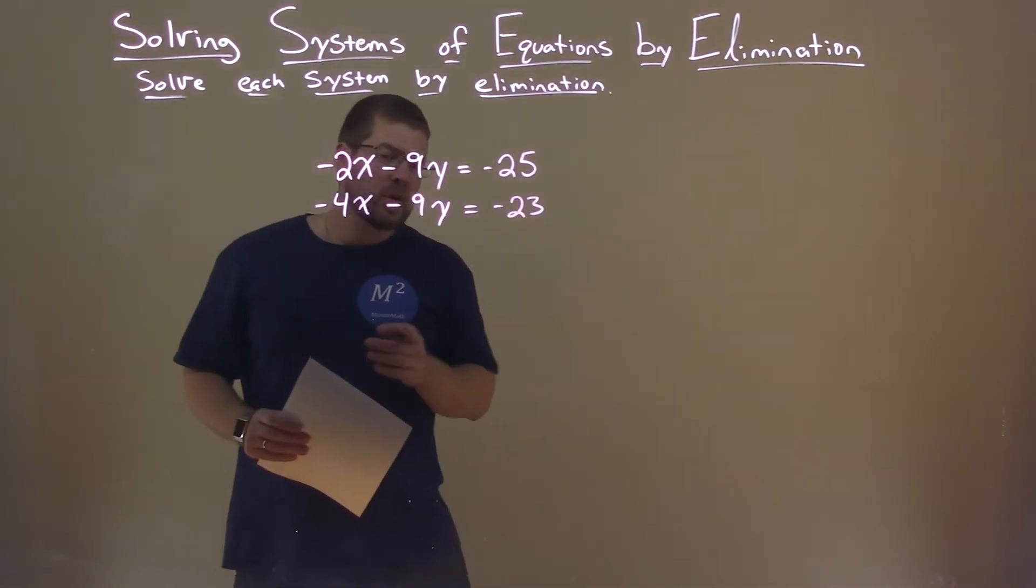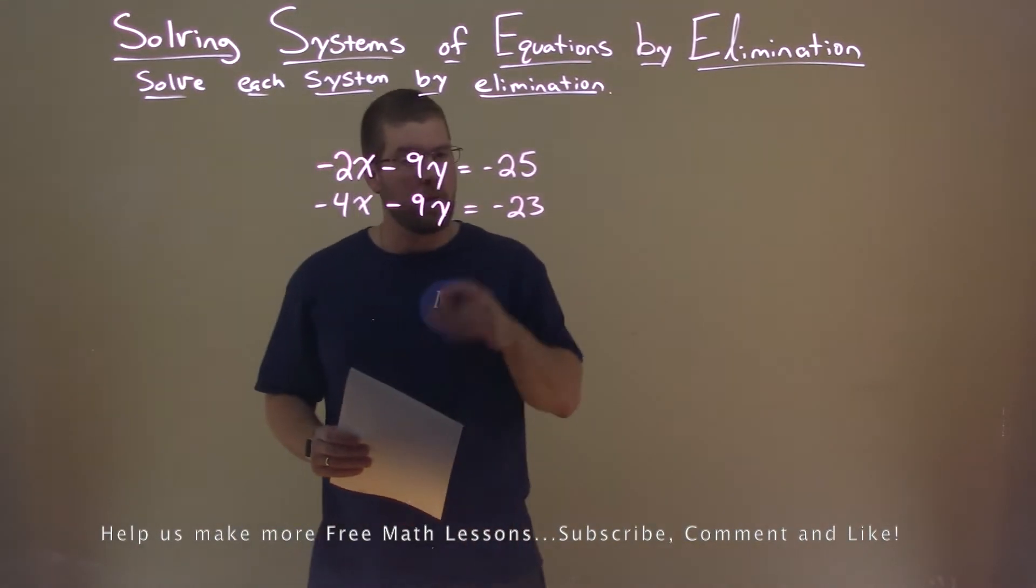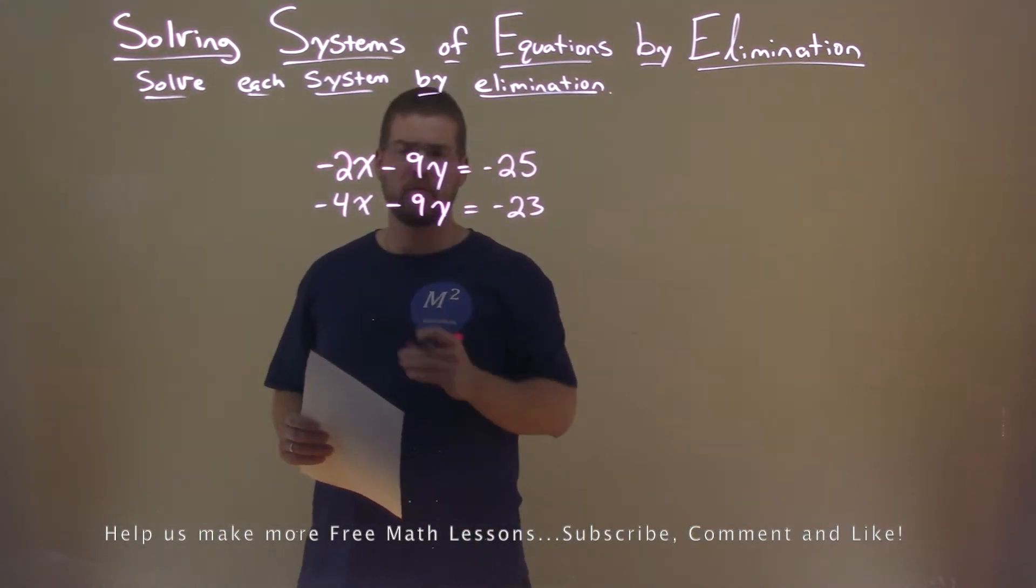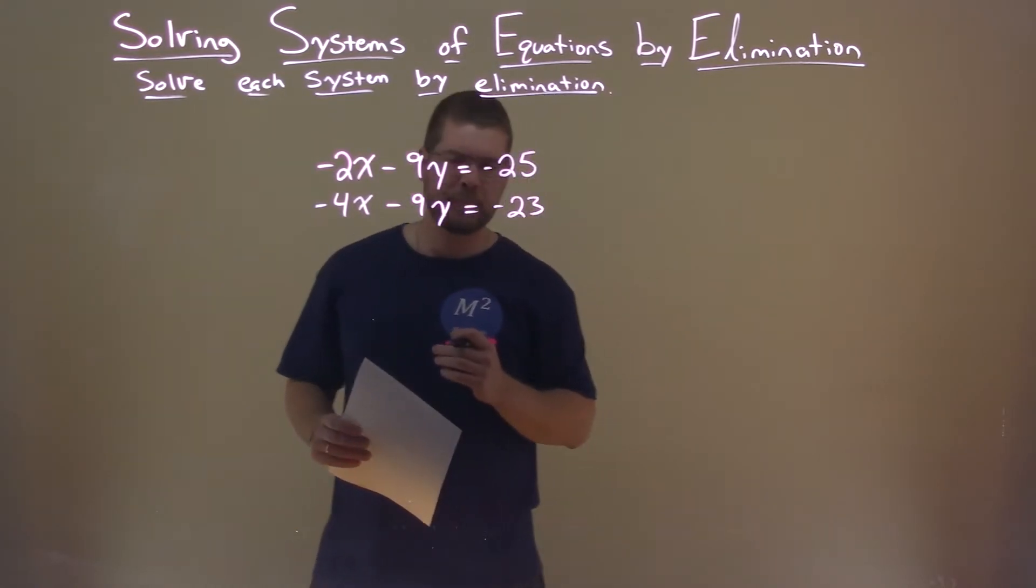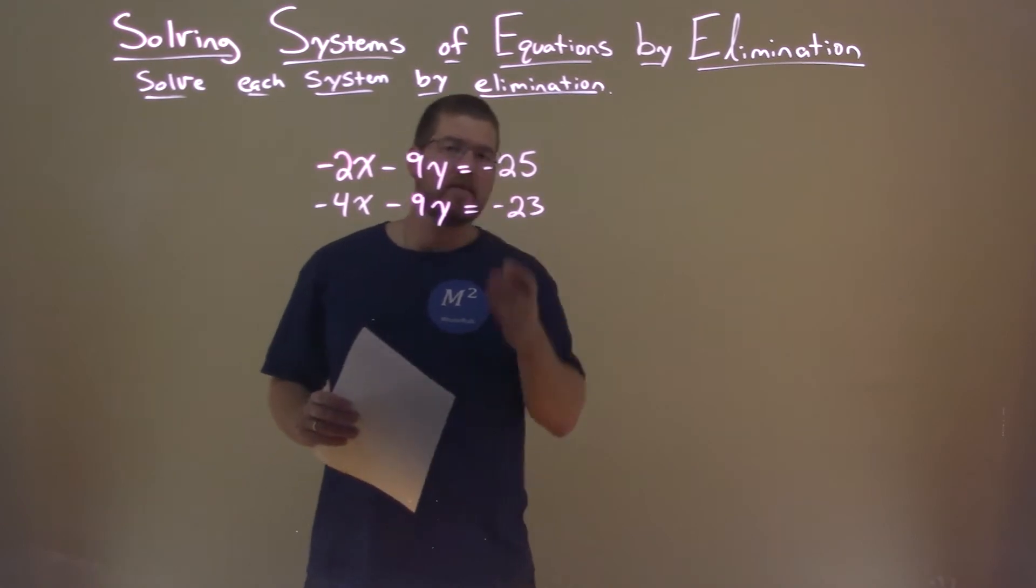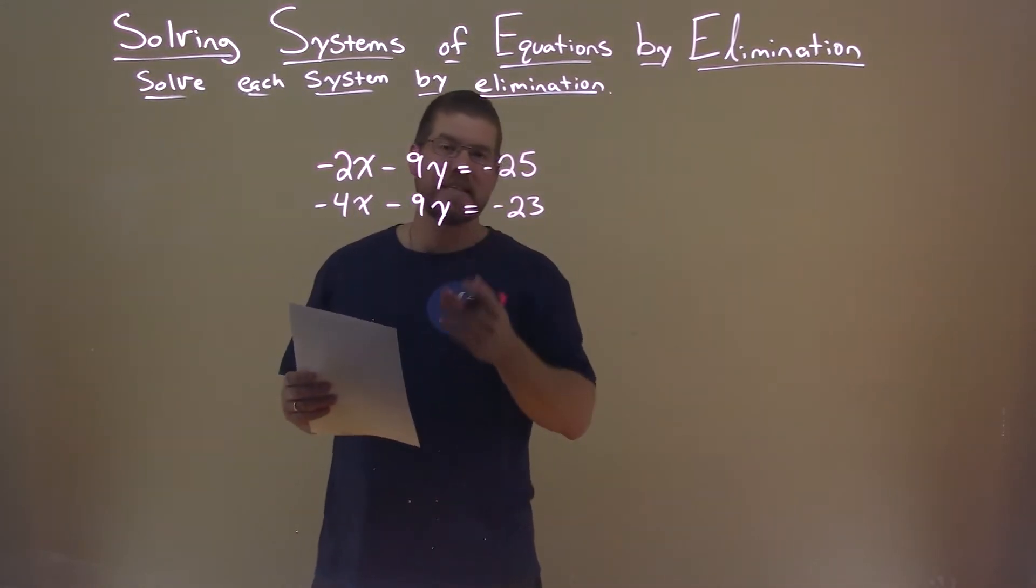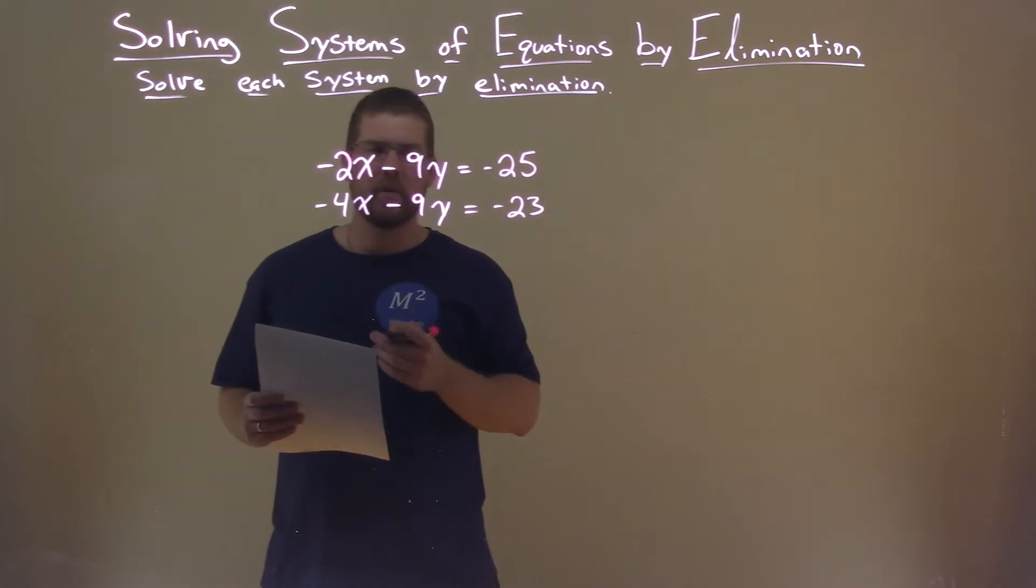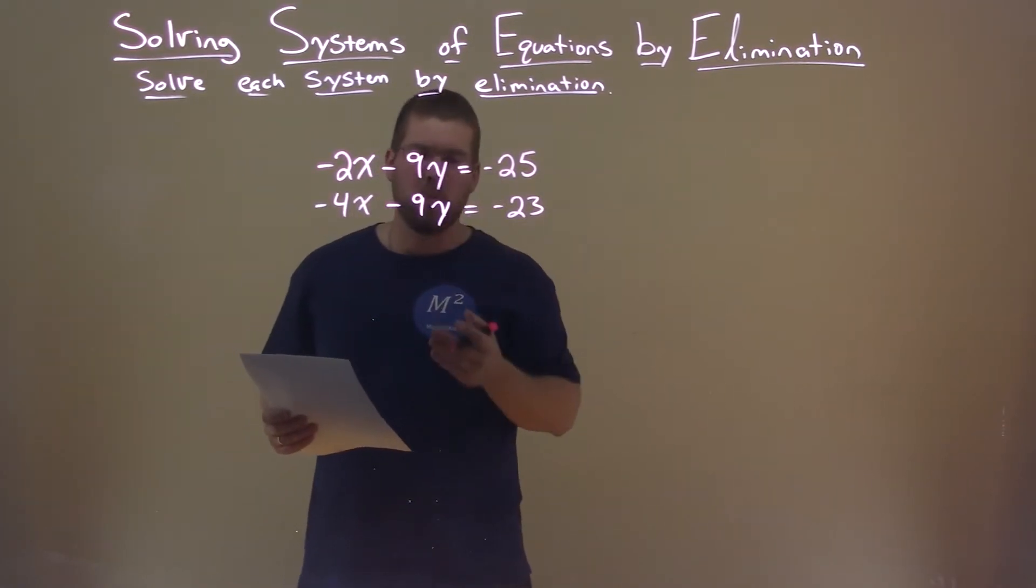So we're going to solve this system by elimination. We're given negative 2x minus 9y equals negative 25, and negative 4x minus 9y equals negative 23. Normally I would just add these two equations, and we're almost there. We would see the 9s are a good choice here to eliminate. But if I add the two together, we won't eliminate the y value.